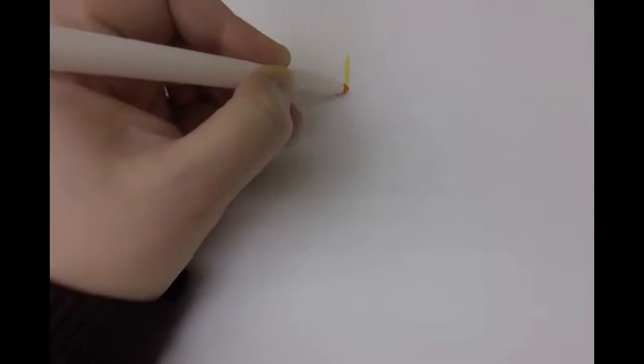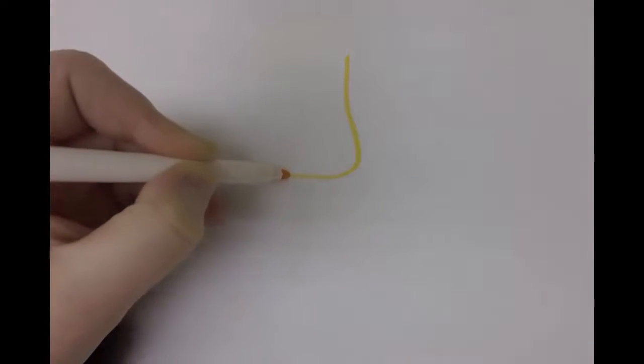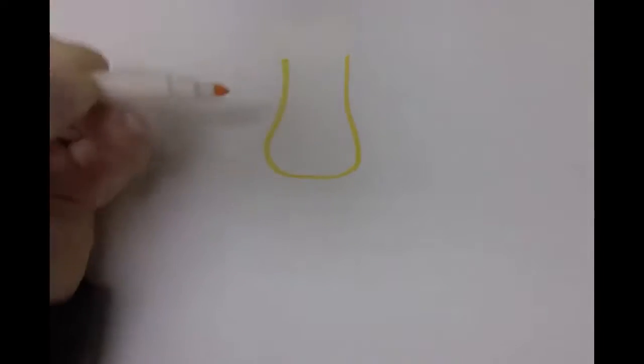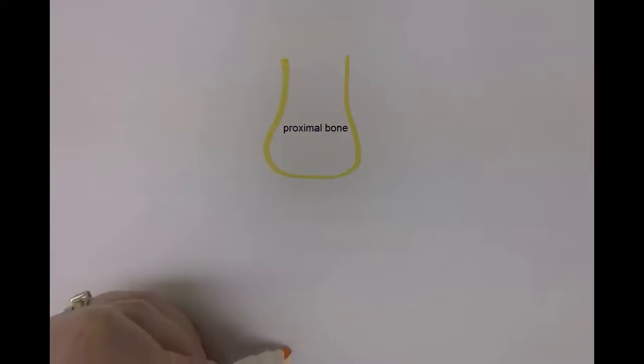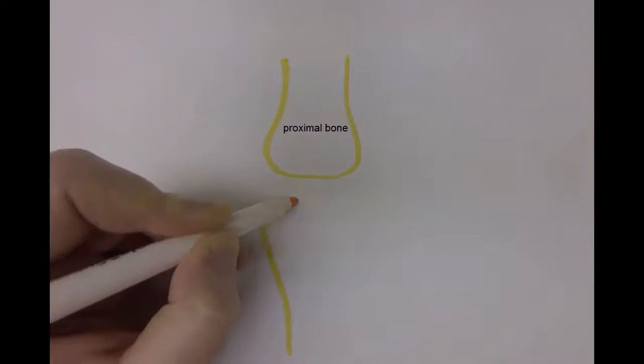This video is about synovial joints and ligament classification. We're going to start by drawing two very simple bones. This is the distal end of one bone and the proximal end of another bone.